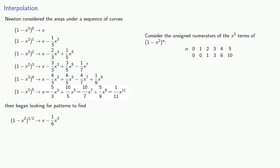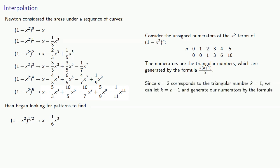Now remember, Newton is learning mathematics at a time where these number properties are part of everybody's education. So Newton actually recognizes this series. These numerators are the triangular numbers, which are generated by the formula k(k+1)/2. Now we have to do a slight reparameterization here. Since n = 2 corresponds to the triangular number k = 1, we can let k = n - 1 and generate our numerators by the formula (n-1)n/2.